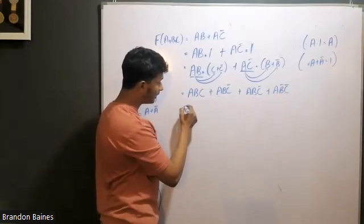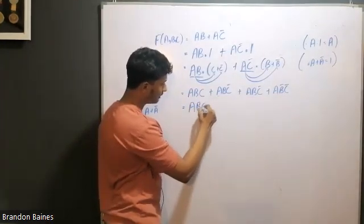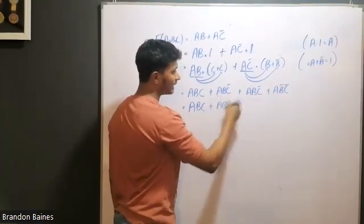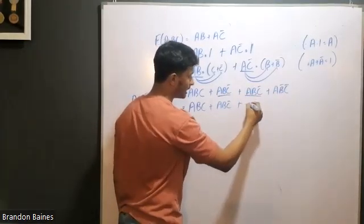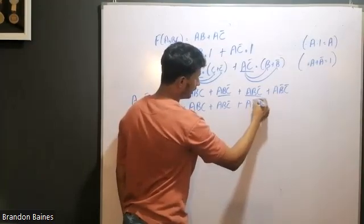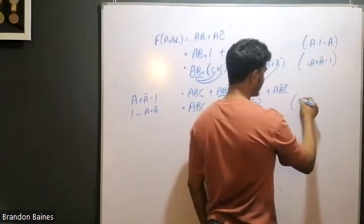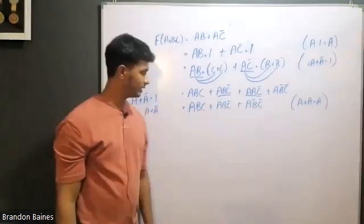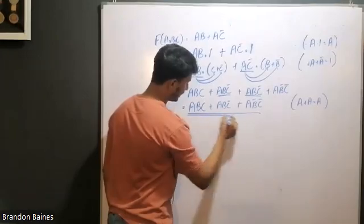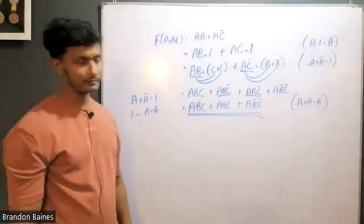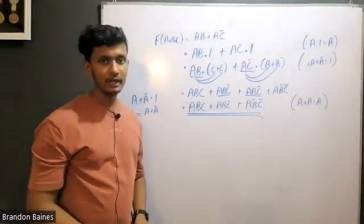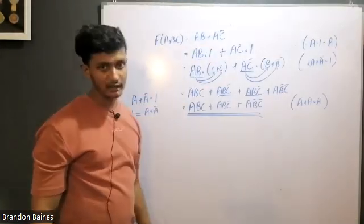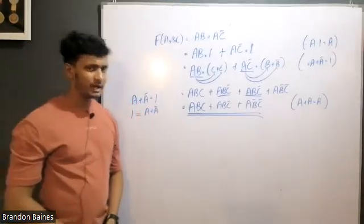It's an expression of the identity — to give you the identity: ABC plus ABC̄ plus... you want to go to the same standard. We have A, B̄, C̄. Now we have to use the identity A plus A equals A. Then we can use this expression to make it three variables.